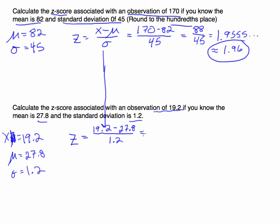The standard deviation in this case is 1.2. So when I plug that in, 19.2 minus 27.8, that value is negative 8.6. And when I divide that by 1.2, rounding to the hundredths place, you get negative 7.17.